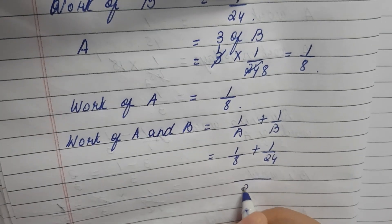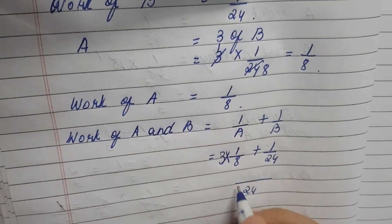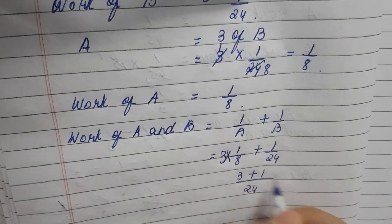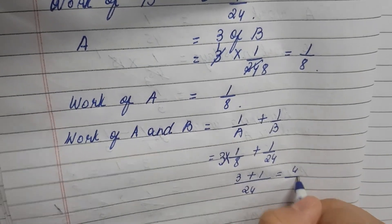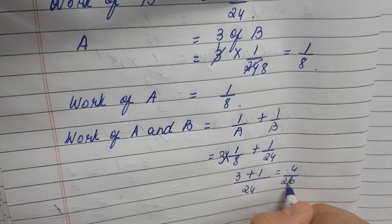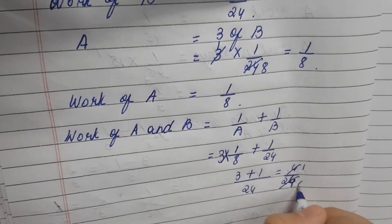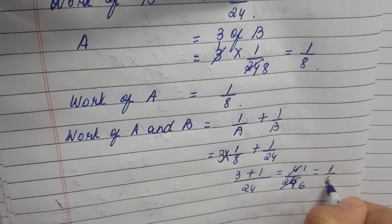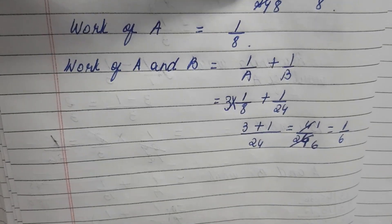In the 24th class because 3 8s are 24. 3 1s are 3 plus 1, so 4 by 24. 4 1 time, 24 6 times. They both will complete the work in 6 days.